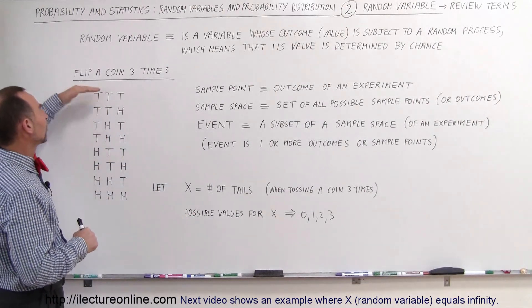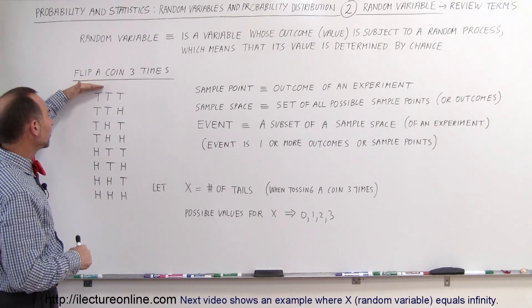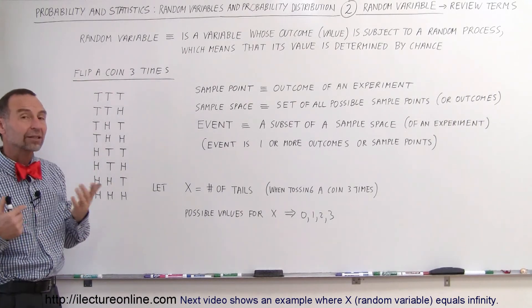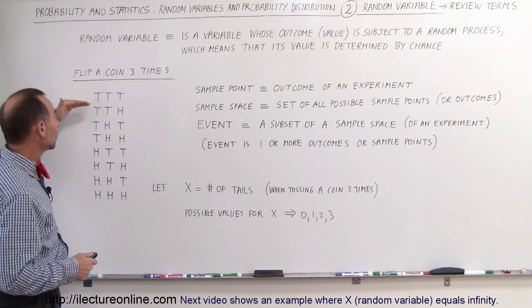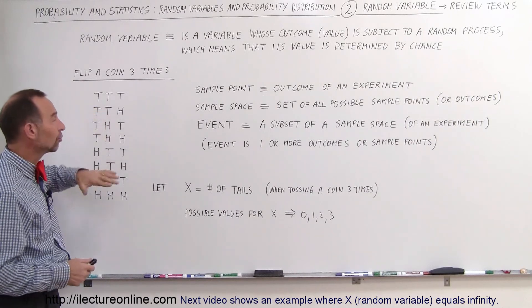So let's say we use our example again, where we flip a coin three times. These are the eight different ways in which an outcome will occur. All tails, two tails and a head, tails, head, tails, and so forth.